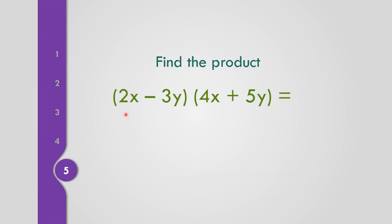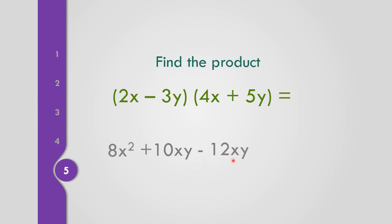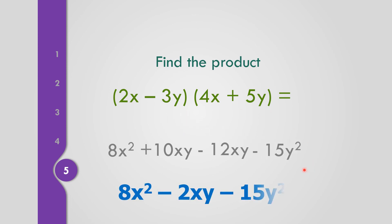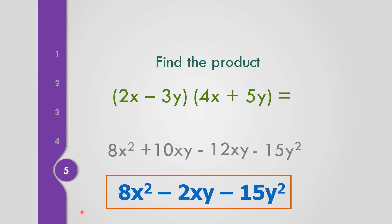In number 5, the quantity 2x minus 3y times the quantity 4x plus 5y. First, 2x times 4x — 2 times 4 is 8 — that is 8x². Next, 2x times 5y — 2 times 5 is 10 — so 10xy. Negative 3y times 4x — negative 3 times 4 is negative 12 — copy xy, so negative 12xy. Negative 3y times 5y — negative 3 times 5 is negative 15, and y times y is y², so negative 15y². Combining: bring down 8x²; 10 minus 12 is negative 2, copy xy; and copy negative 15y². So the final answer is 8x² − 2xy − 15y².